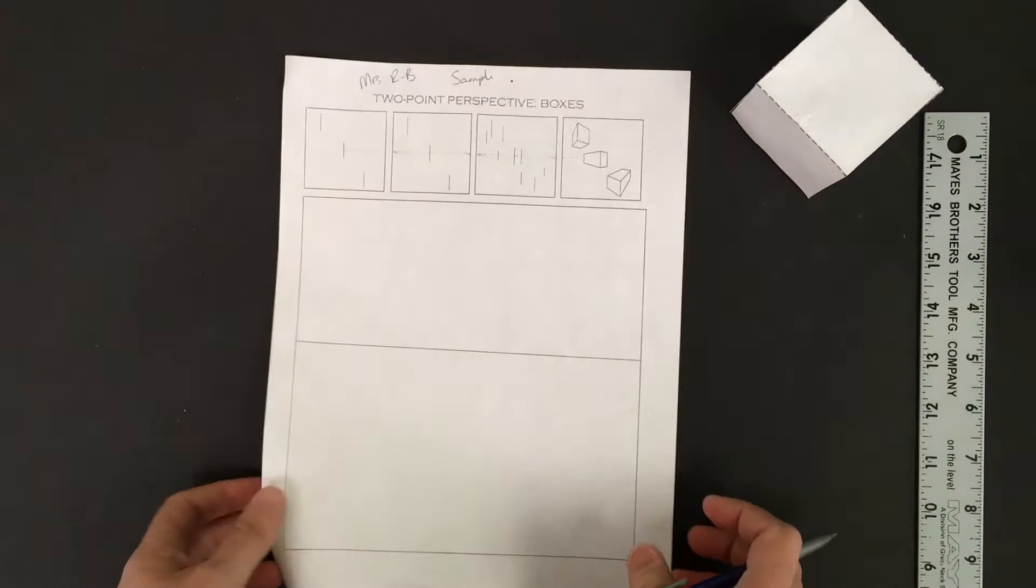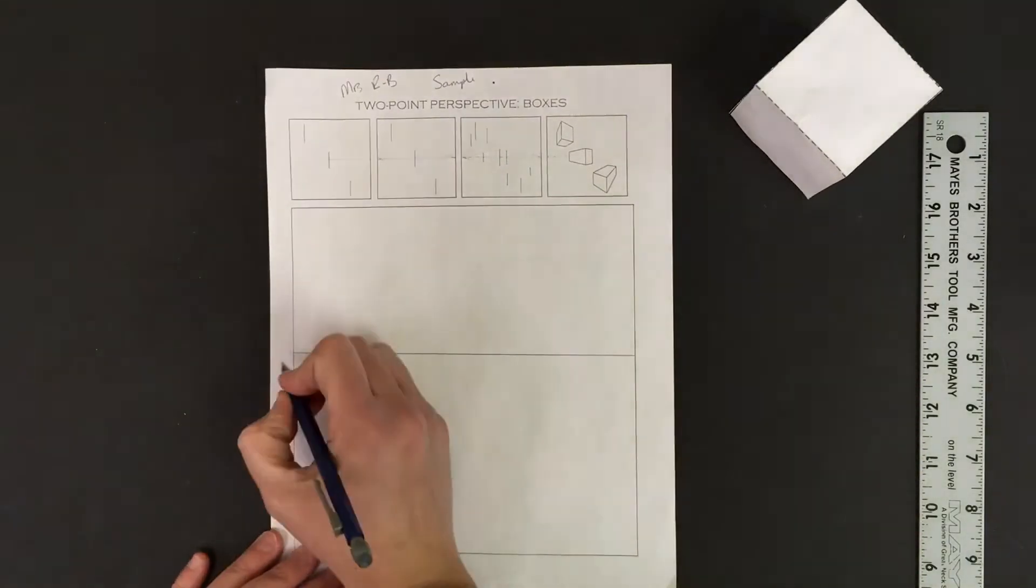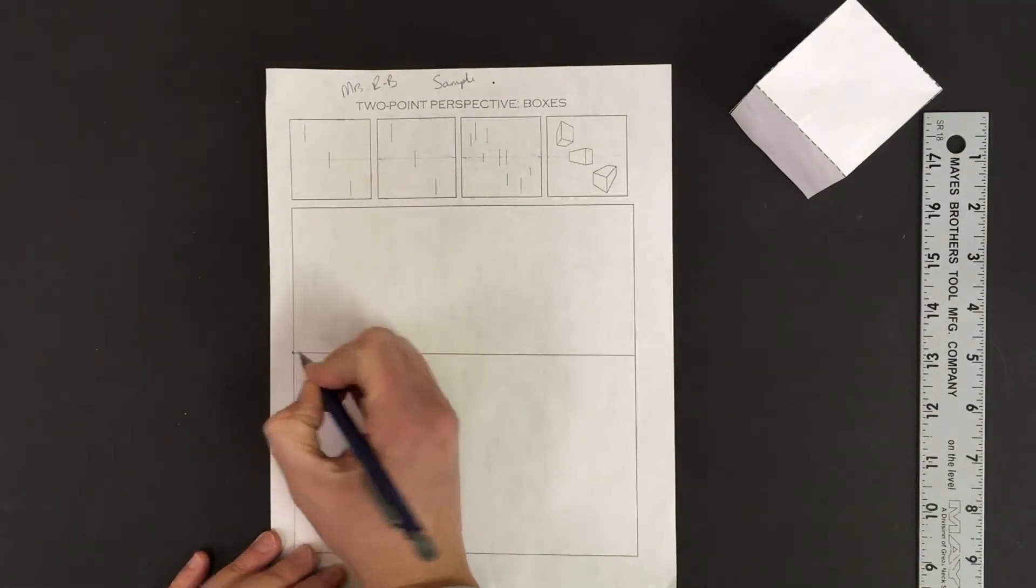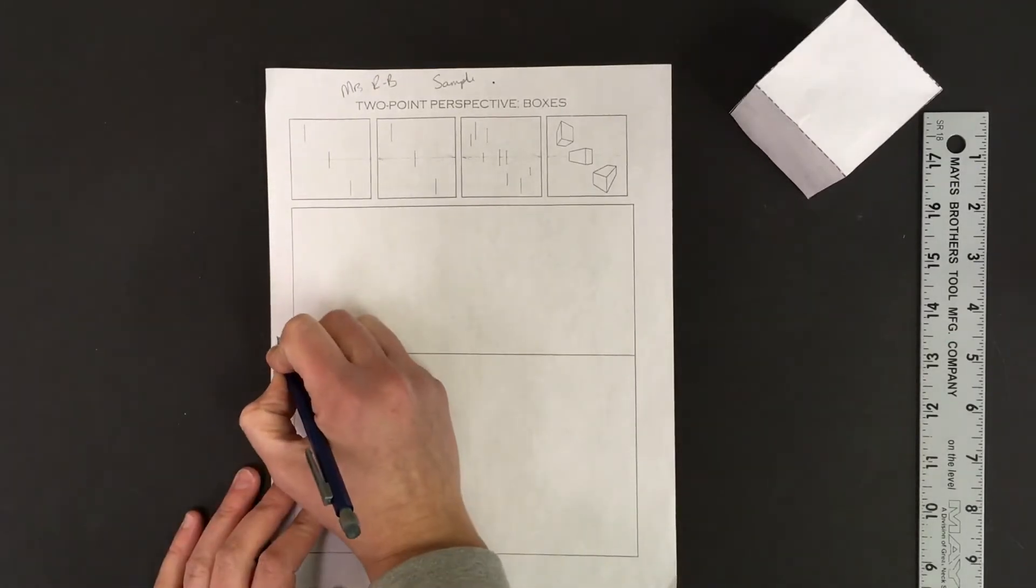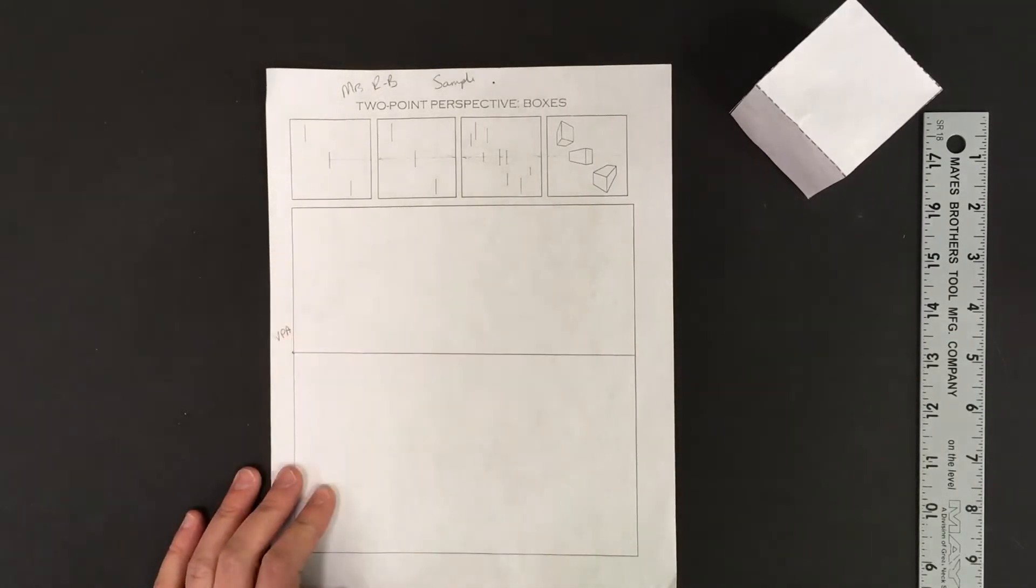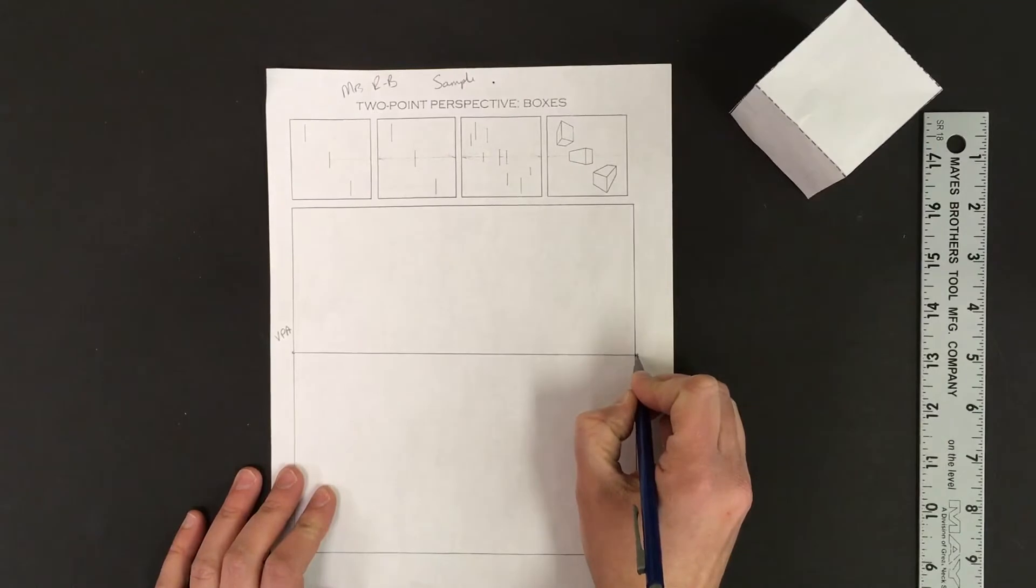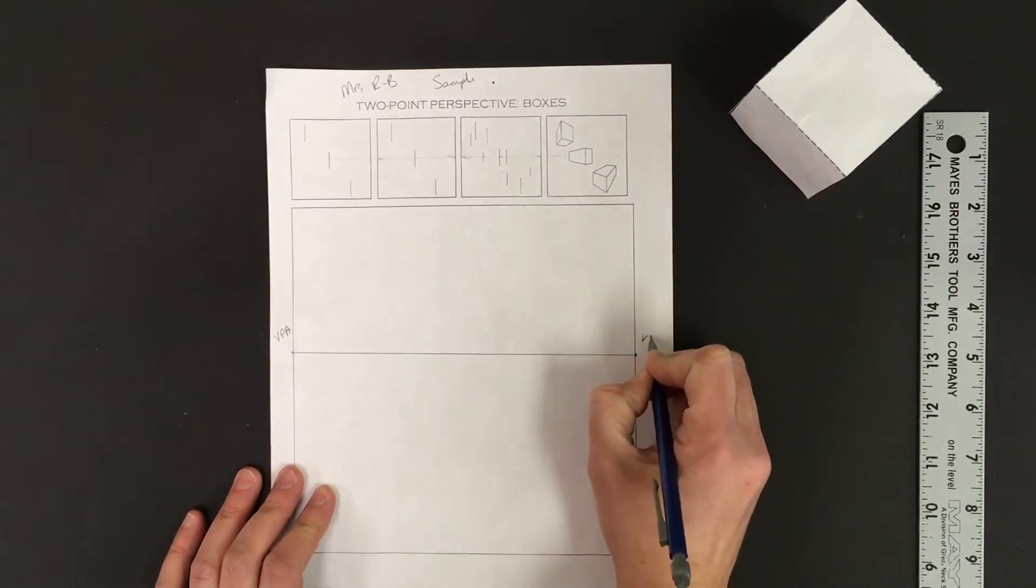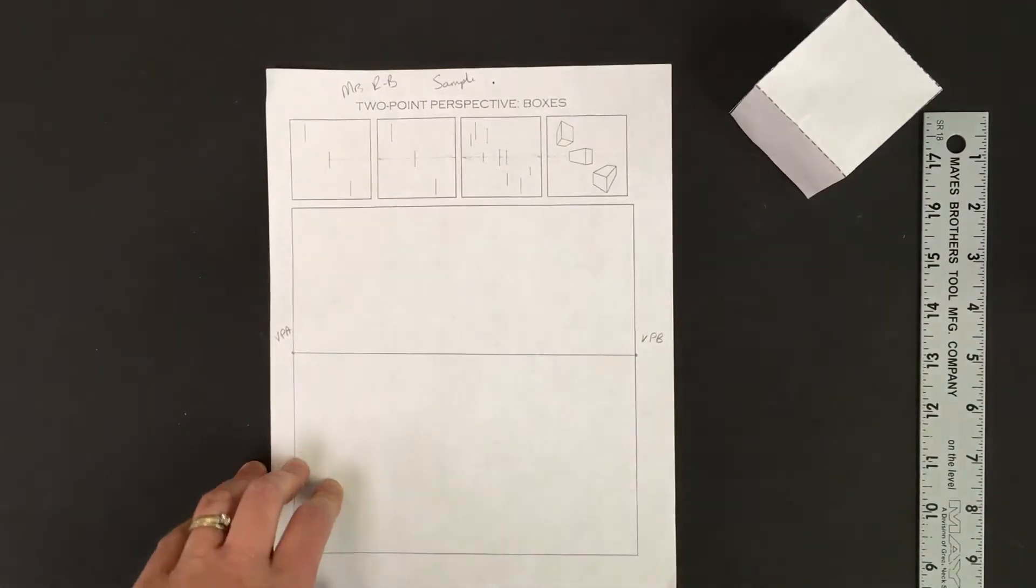There's my horizon line. Let's also include our two vanishing points, and I mean actual points. So put a dot at the end of your line. And on the left hand side of your paper, please call that vanishing point A. On the right hand side of your paper, dot again, vanishing point B, VPB.